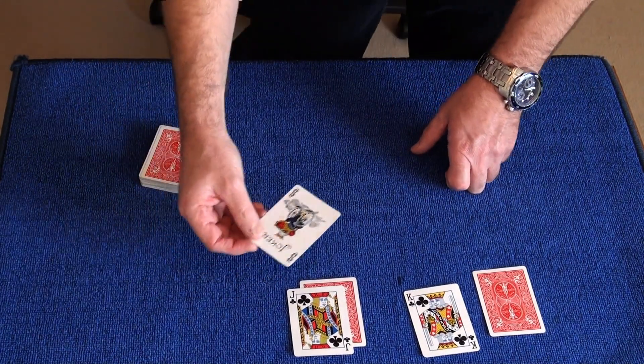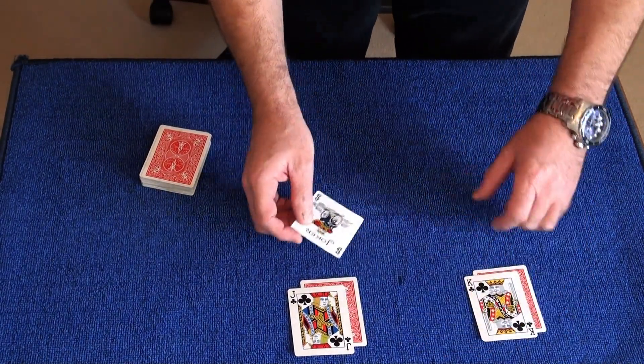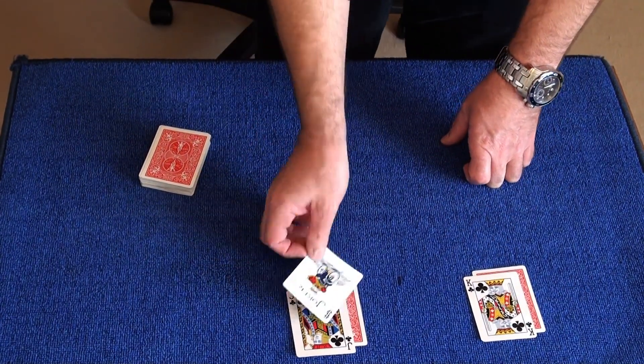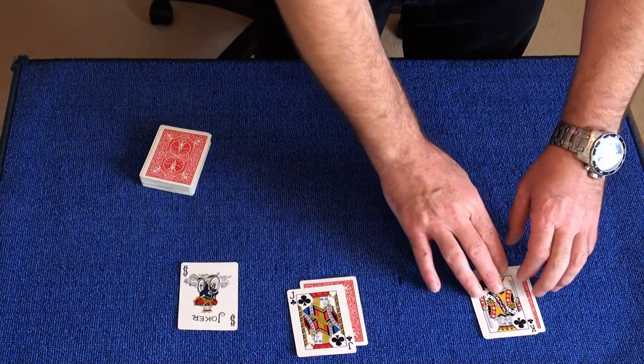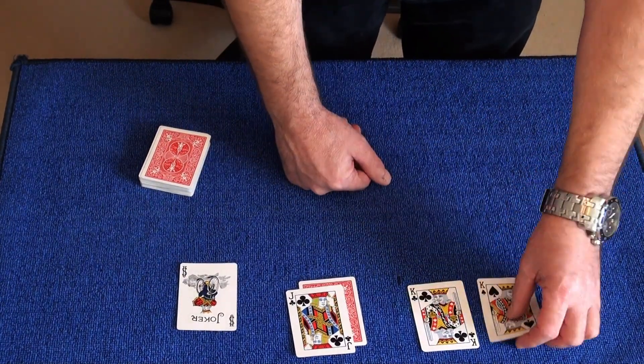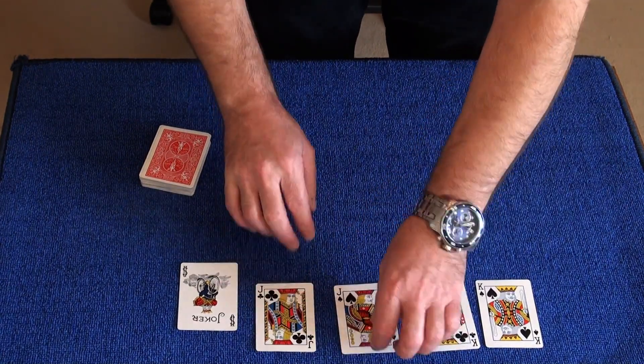Now this joker is playing the part of the matchmaker. So if I just place the card on top of this pair and on top of this pair here, it should match the cards up like so.